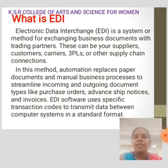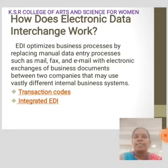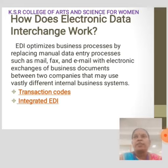EDI software uses specific transaction codes to transmit data between computer systems in standard formats. How does Electronic Data Interchange work? EDI optimizes business processes by replacing manual data entry processes such as mail, fax and email with electronic exchange of business documents between two companies that may use different international business systems. Transaction codes: most EDI transactions start by creating an electronic document based on information from your business systems, spreadsheet or related transactions.